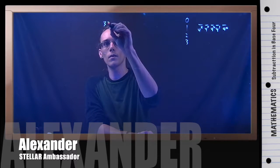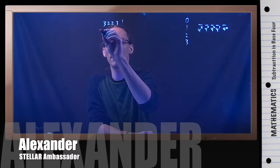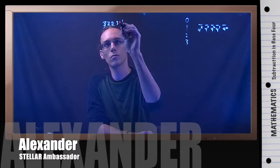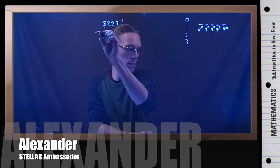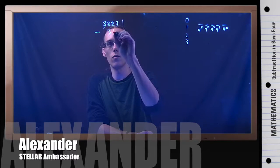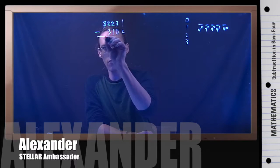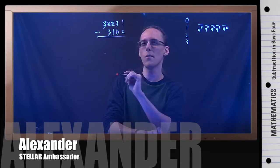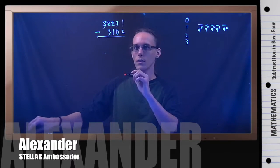The numbers we're going to be subtracting are 3, 2, 2, 3, 1. And from this, we're going to be subtracting 3, 1, 0, 2. Notice I'm very careful not to say 32,231 because this is not base 10 — this is base 4.